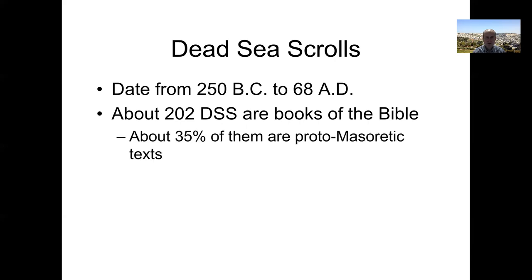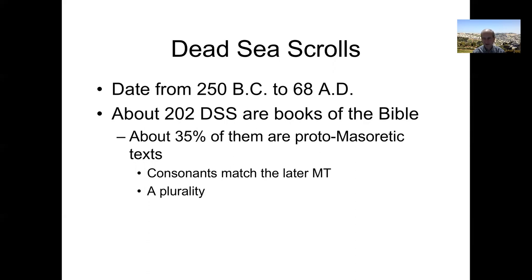Of that group, about 35% of them are what can be called proto-Masoretic texts — proto-Masoretic in the sense that the consonants match the later Masoretic text. 35% is a plurality of the biblical Dead Sea Scrolls. The rest: a few are similar to the Septuagint, some have a lot more vowel letters (I'll talk about that later), and they're kind of an eclectic group. But the plurality — the largest grouping — are proto-Masoretic texts.